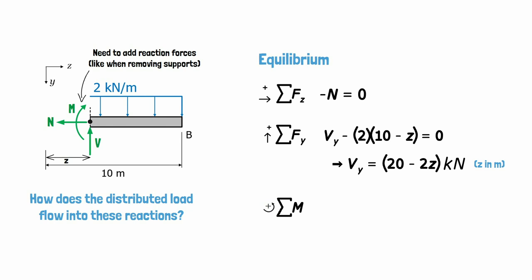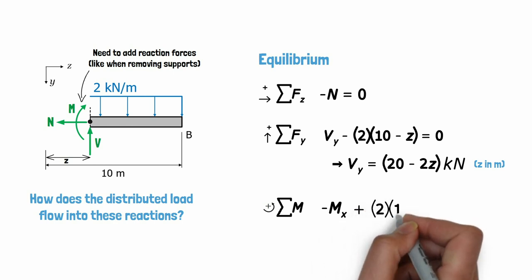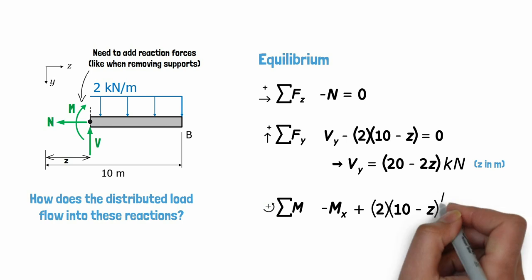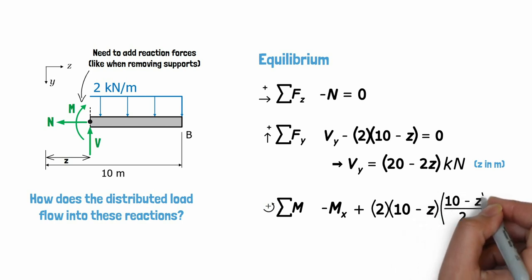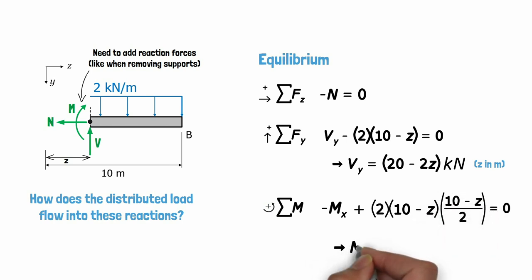Thus, we end up with negative MX, as it acts clockwise, not counterclockwise, being summed with the moment caused by the resultant force of the distributed load, 2 times 10 minus Z, acting at a moment arm distance of 10 minus Z divided by 2. If we rearrange this, we can then obtain an expression for the internal bending moment as a function of Z, which will have the units of kilonewton meters when Z is in meters.